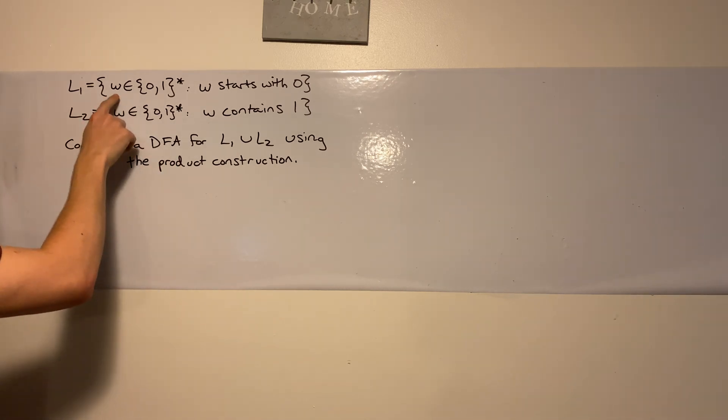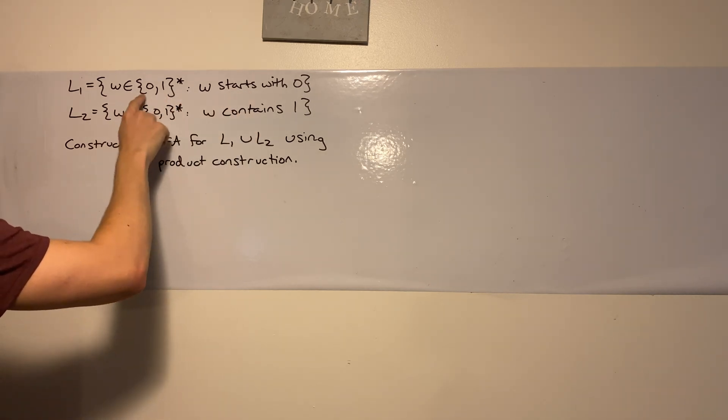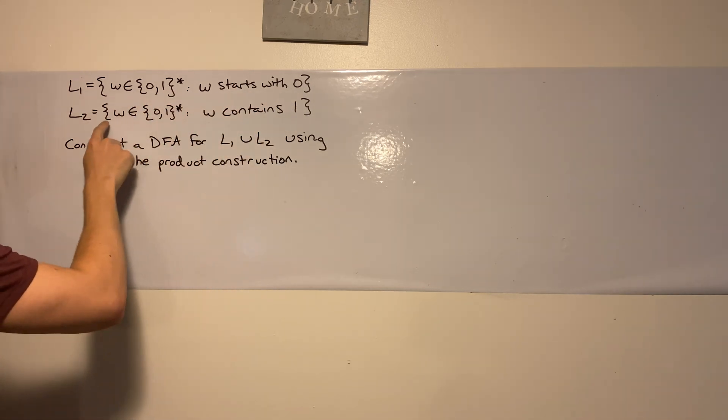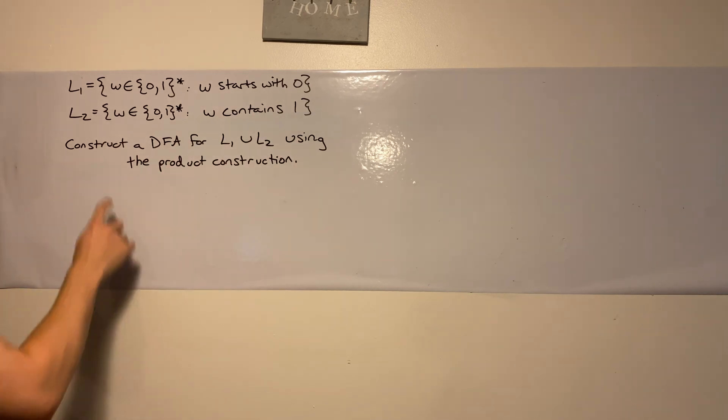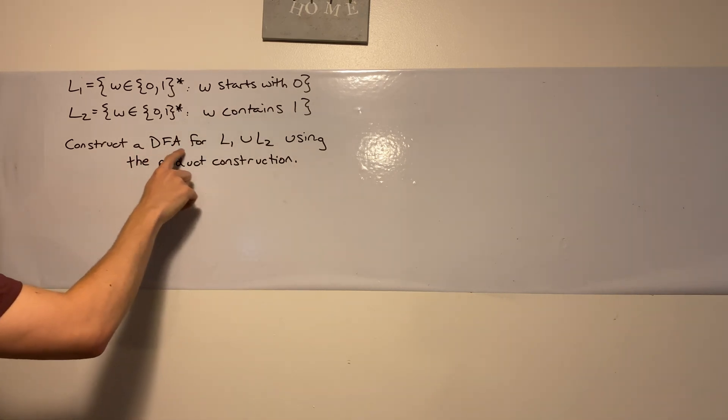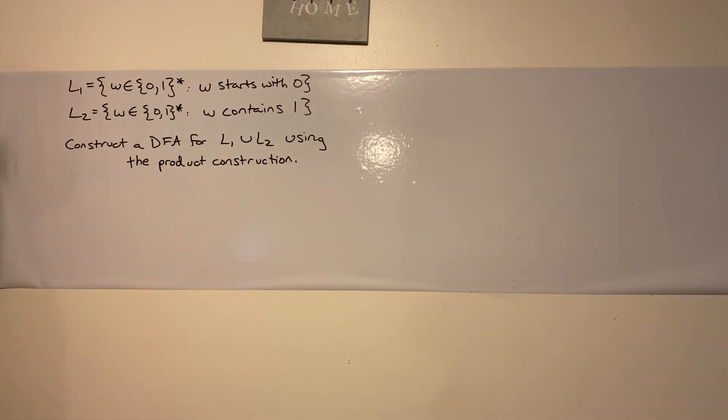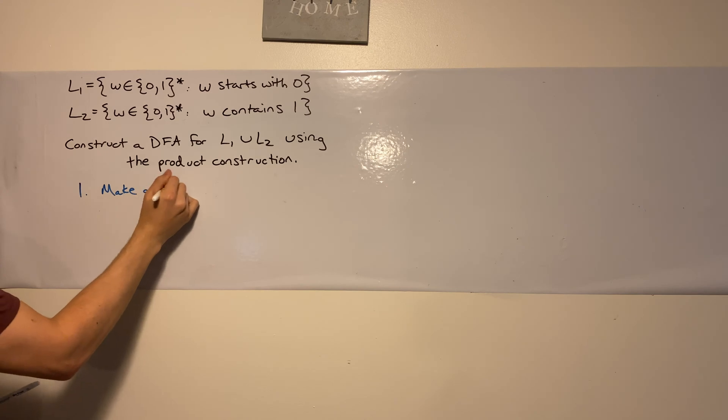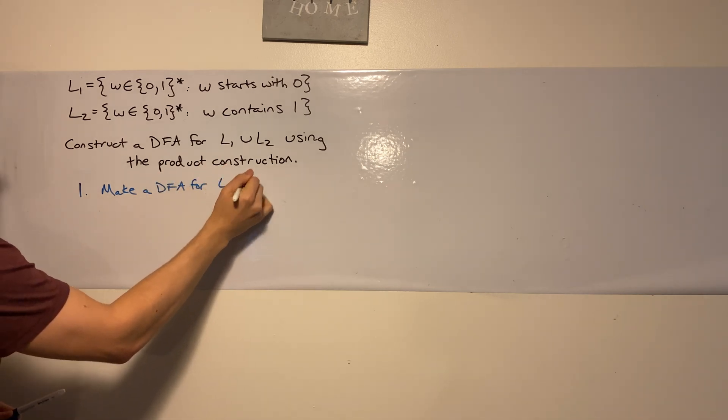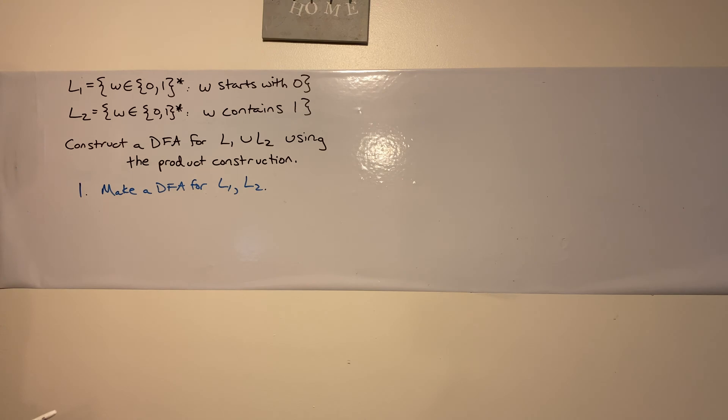So we got two languages. L1 where all the strings in 01 star start with 0. L2, all the strings contain a 1. And we are destined to make a DFA for the union of the two using the product construction. So here is Ryan's two-step technique to use the product construction. The first step is make a DFA for L1 and L2.